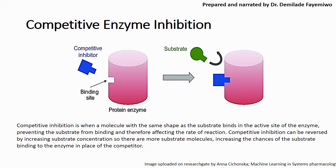What then happens is that the inhibitor binds to the enzyme and prevents the substrate from binding. This will obviously affect reactions because in inhibition there will be no product formed — the inhibitor, despite having the same shape as the substrate molecule, does not necessarily yield a product. That means the enzyme is not able to catalyze reactions on the substrate in order to give products. So inhibition is a very, very big problem.